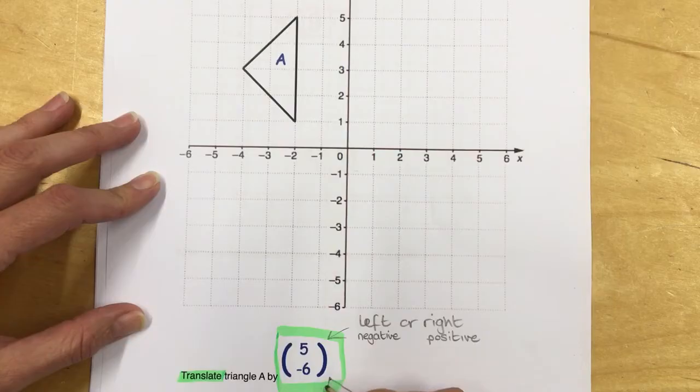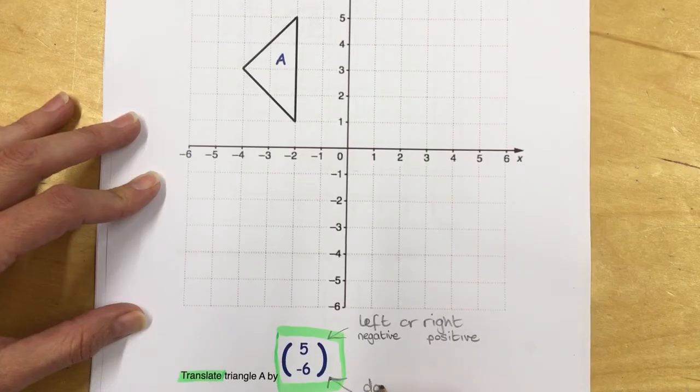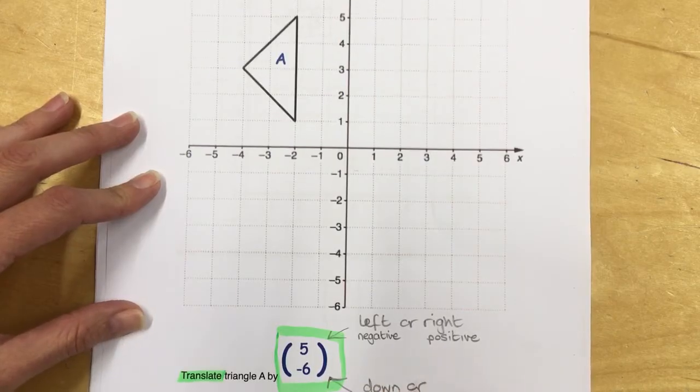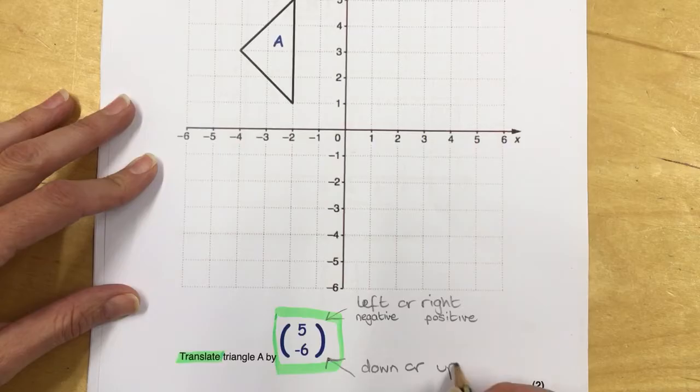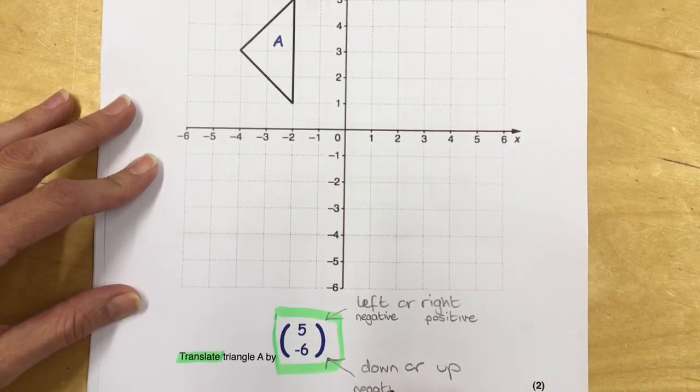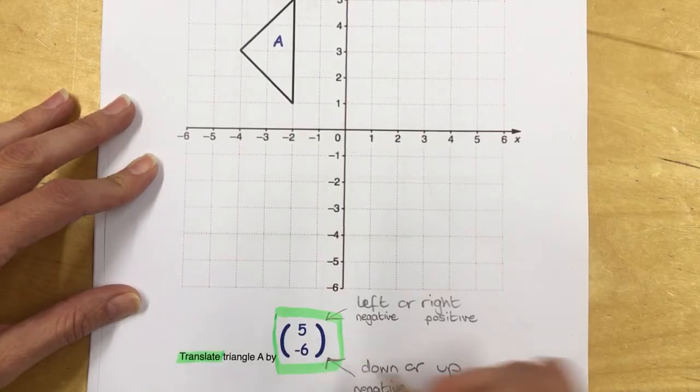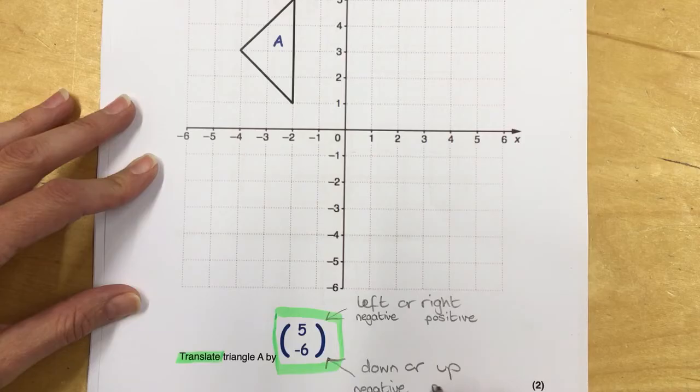The bottom number tells you if it goes down or up. If it's negative, it moves down. If it's positive, it goes up.